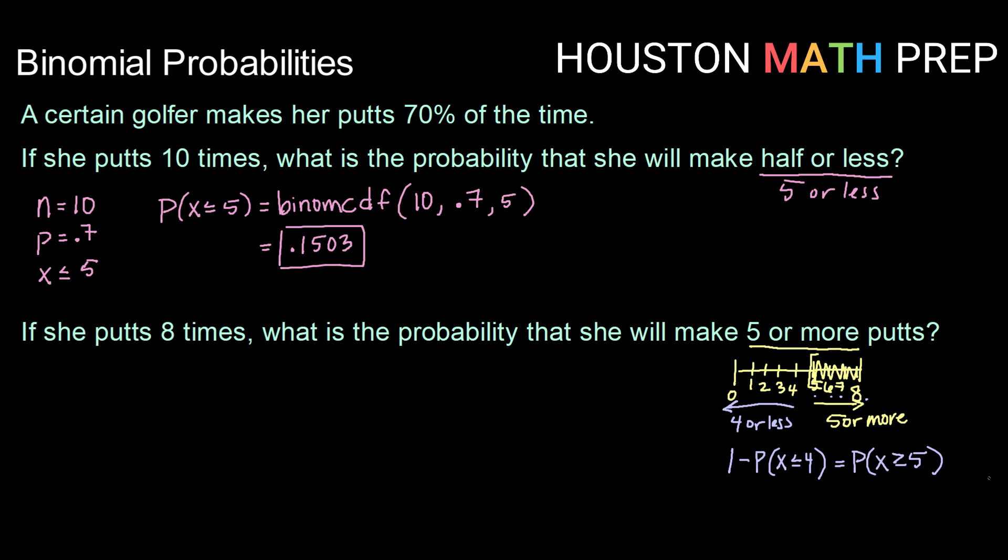So essentially we're saying, okay, we want to be 5 or more. Let's find the probability of being below that using our CDF and do 1 minus.